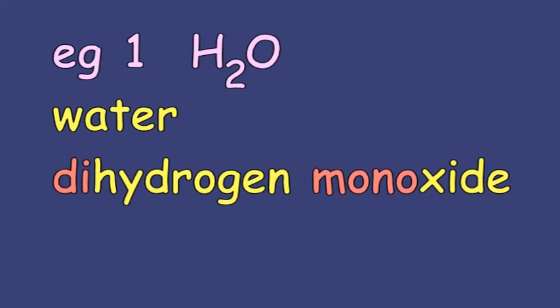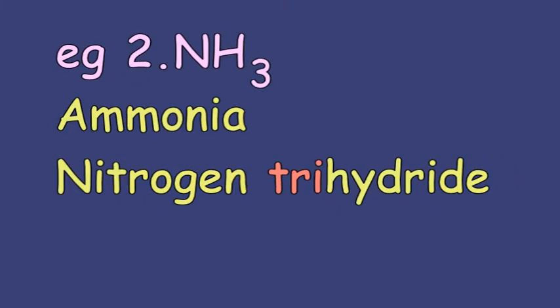I'm quite comfortable with the IUPAC system calling water, water. An alternative using this new system is dihydrogen monoxide. The IUPAC name for ammonia is ammonia. Using our simple method, we could call it nitrogen trihydride.